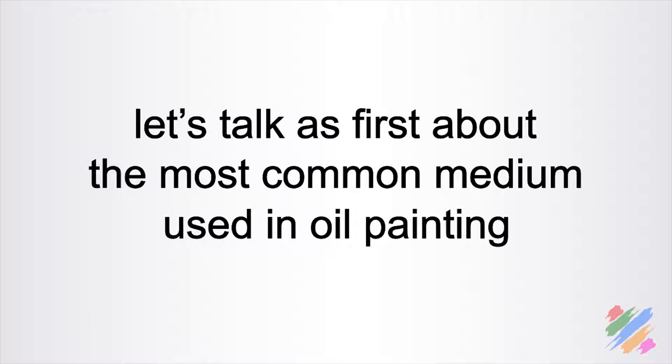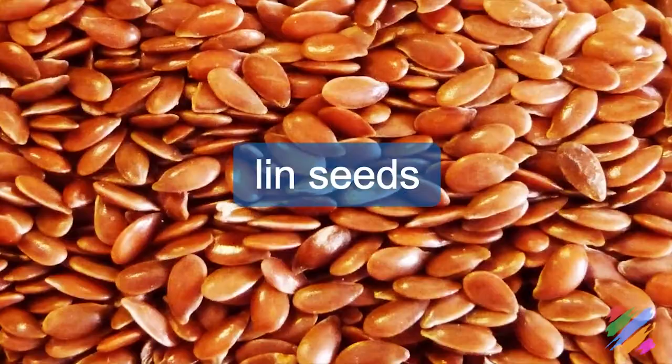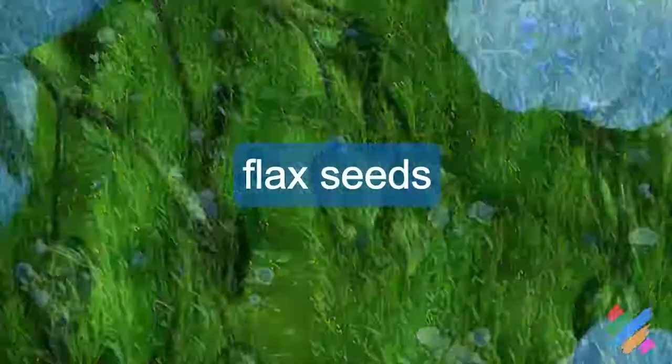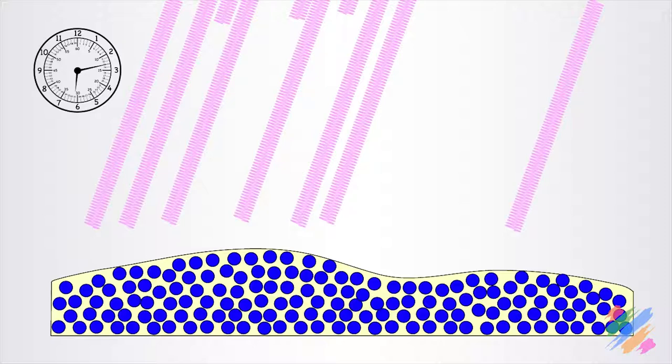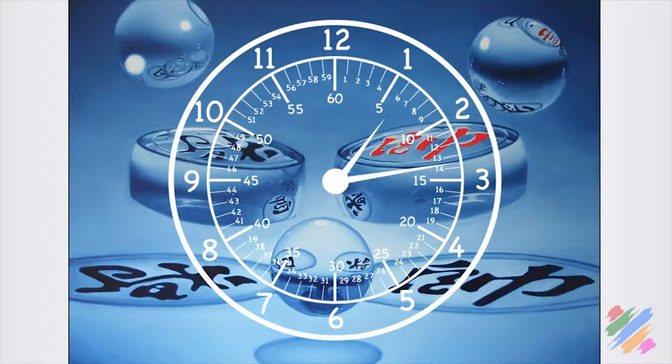Let's talk first about the most common medium used in oil painting, the linseed oil. It's produced by pressing linseeds, which are also called flaxseeds. According to the processing that it has received, it may be uncolored or tending to yellow. It's not really resistant to the ultraviolet rays. When it gets exposed to the light for a long time, it tends to turn into yellow.